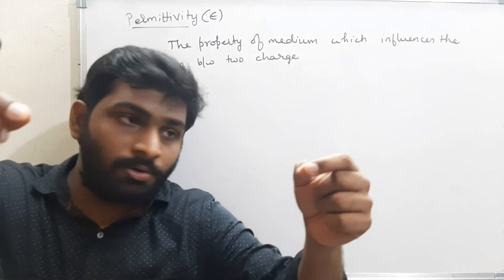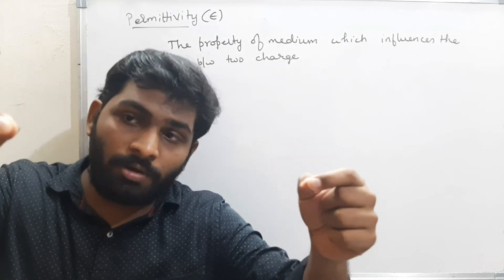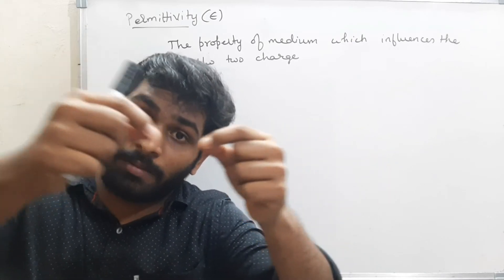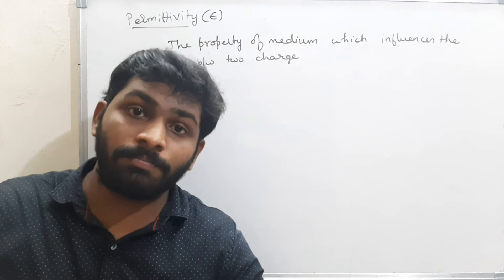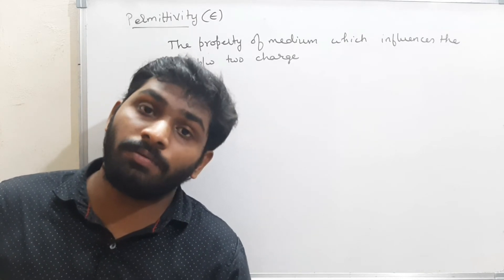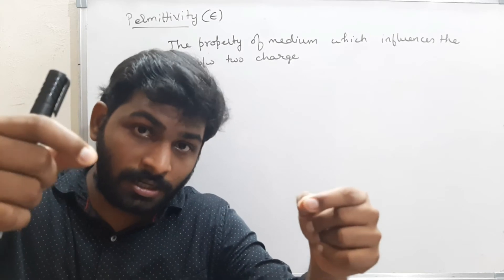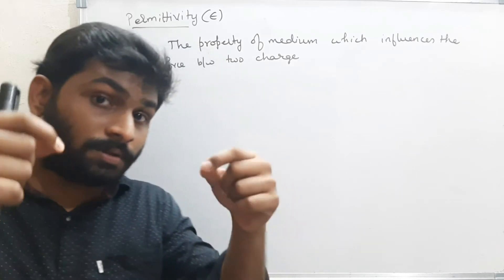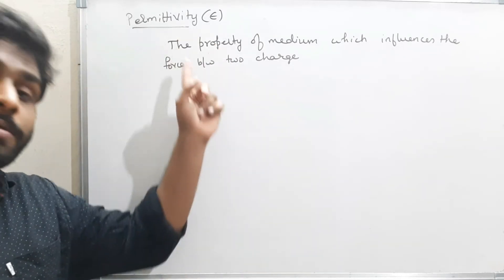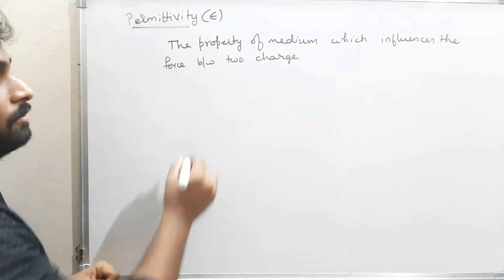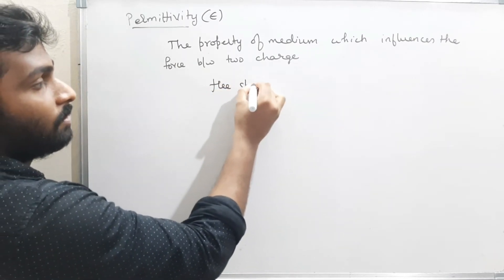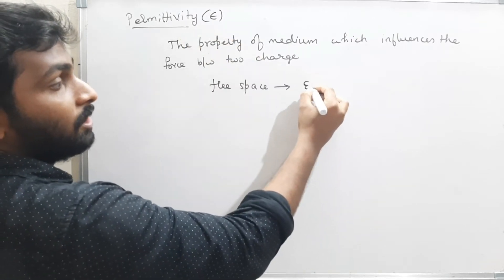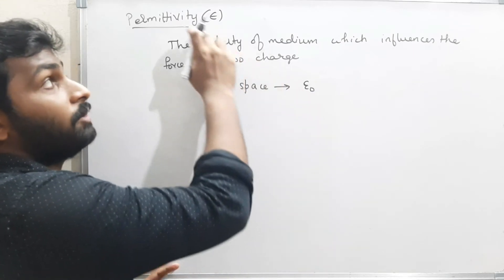I took two charges at distance R. When I keep them in air medium, the force has one value. When I keep the same charges at the same distance in water medium, the force is different. The property of the medium that influences this force is called permittivity, or absolute permittivity. For free space, the permittivity is ε₀ (epsilon naught).